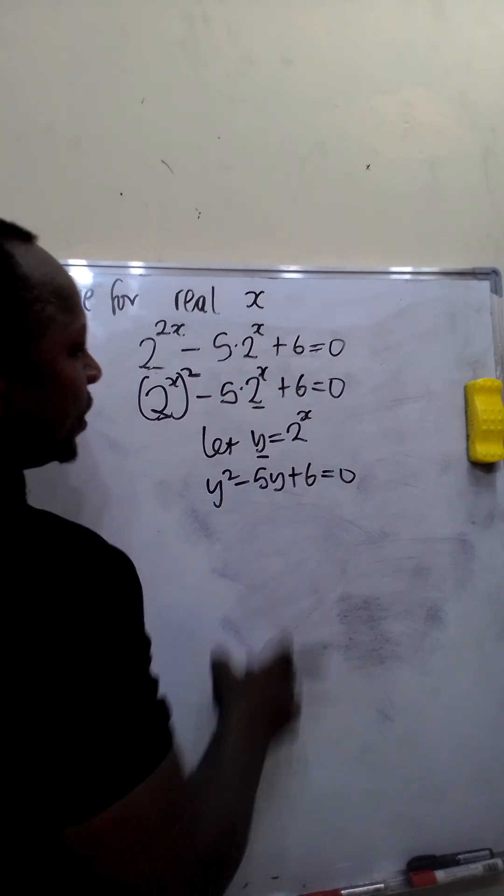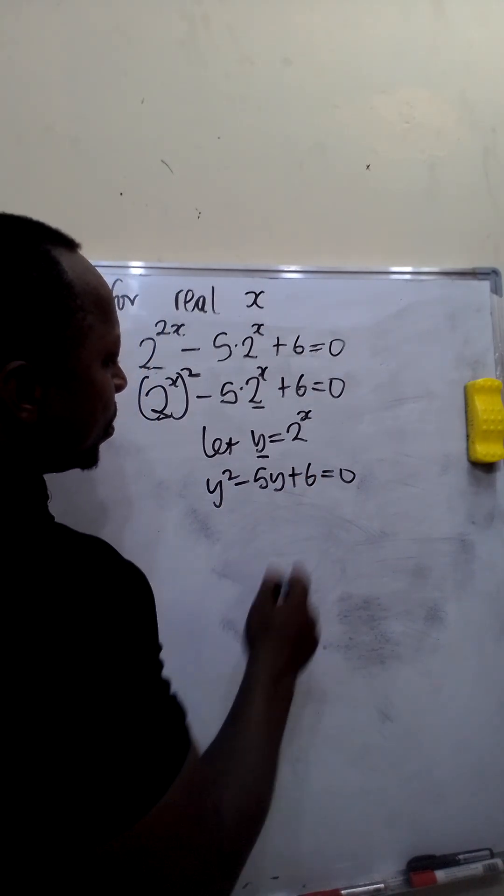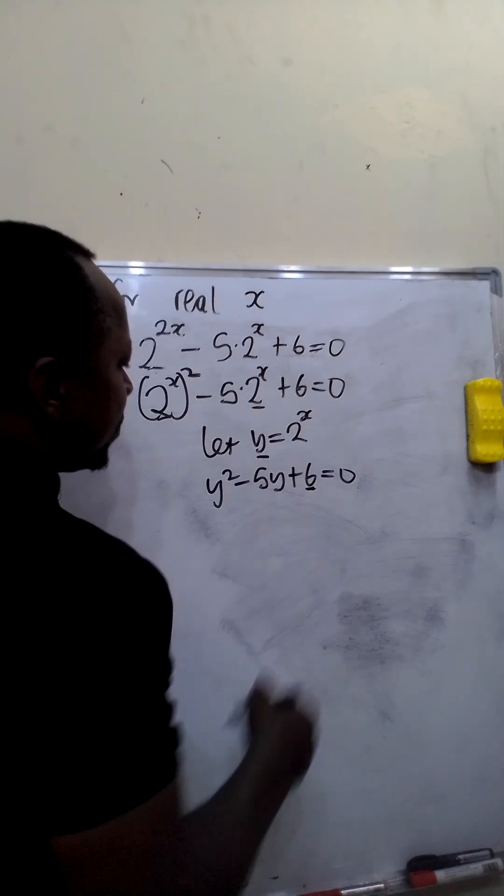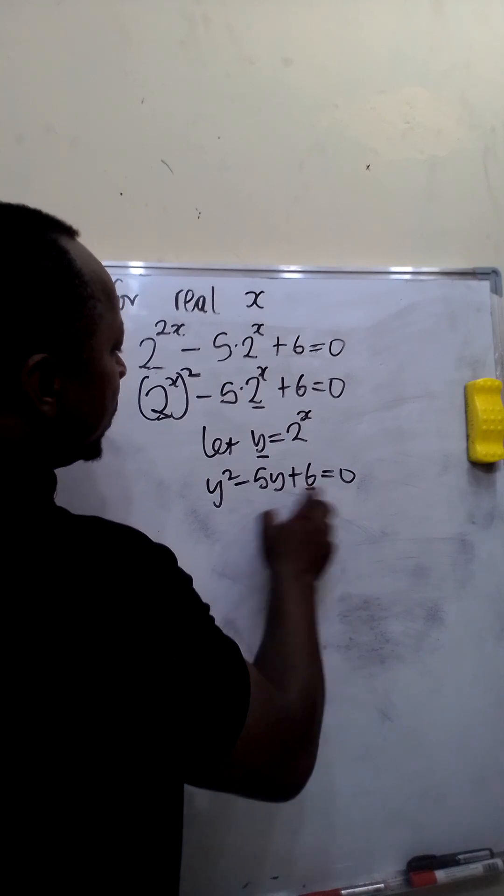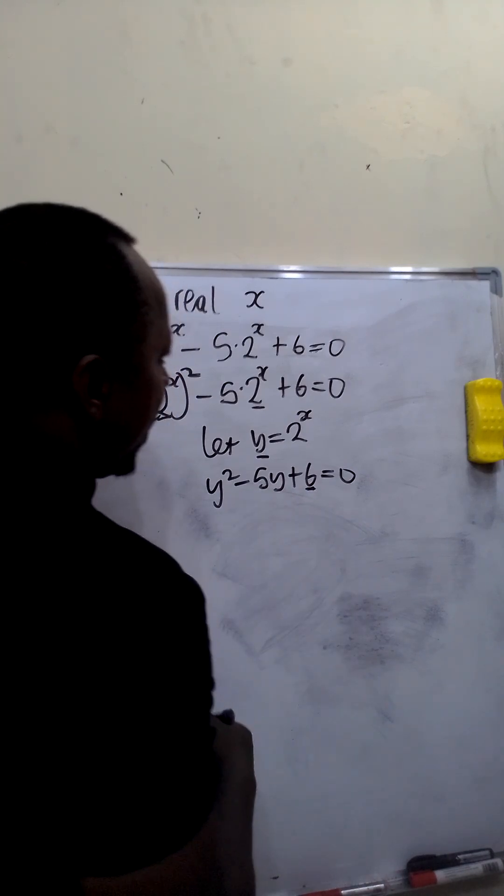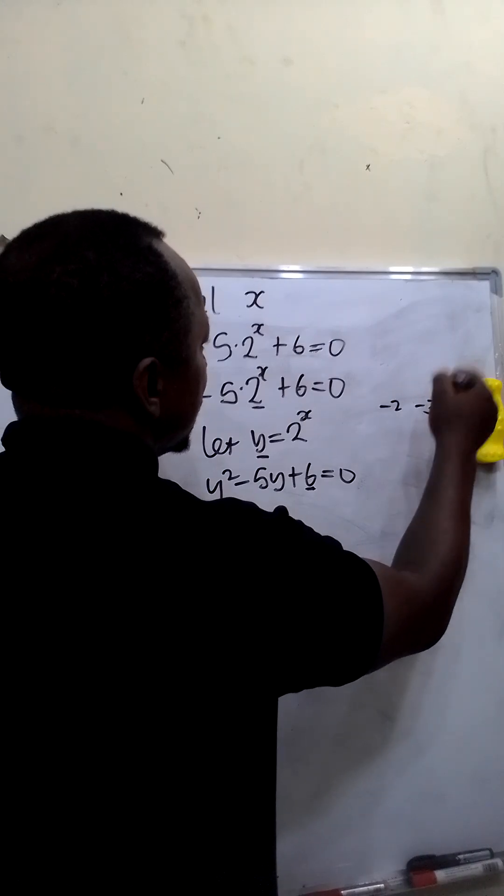Now this is a quadratic equation. We can factorize this equation by finding 2 factors of 6 such that when we multiply it will give us 6 and when we add it will give us minus 5y. These two factors are minus 2 and minus 3.